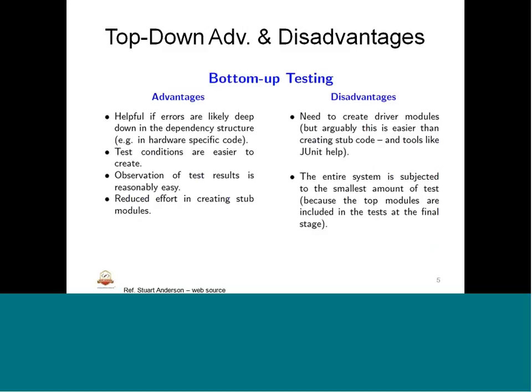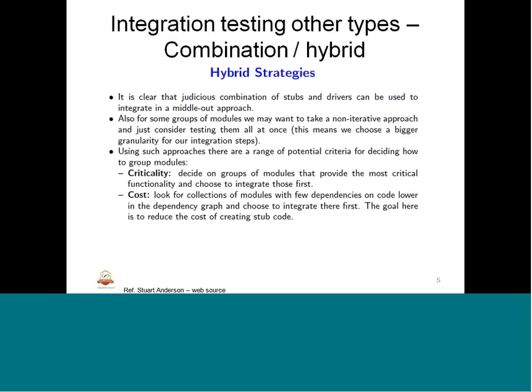Another approach called hybrid testing uses both top-down and bottom-up. This is preferred in many industry contexts where larger systems — small to complex embedded systems or embedded subsystems — are involved. A hybrid strategy uses a combination of both test stubs and test drivers, a middle-out approach. This is factored based on criticality and cost, making it subjective to apply in practice.